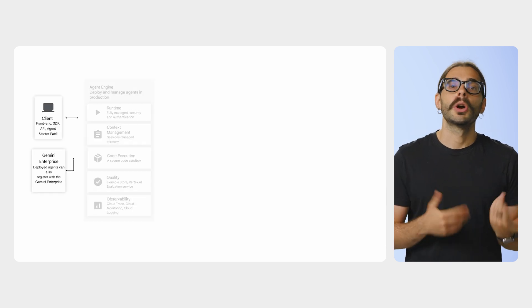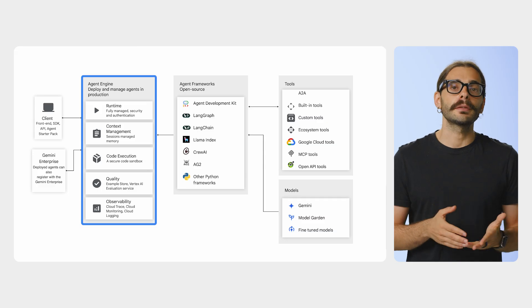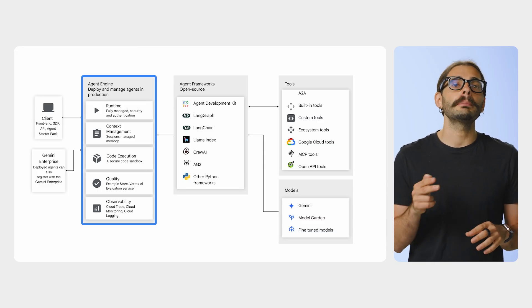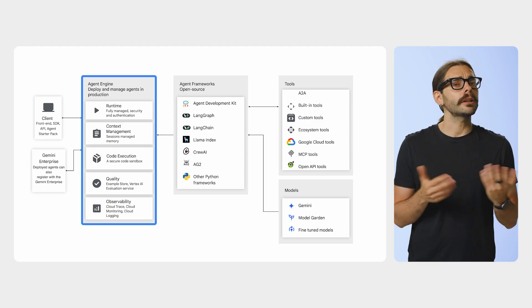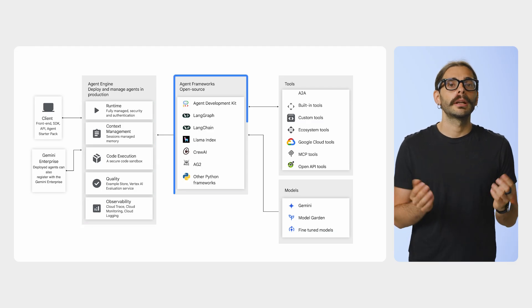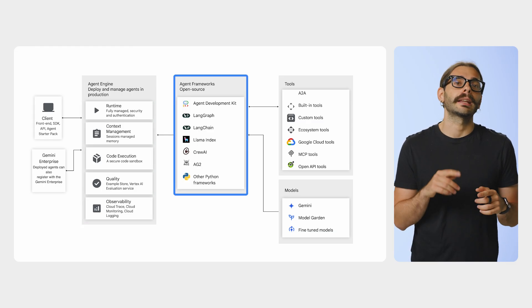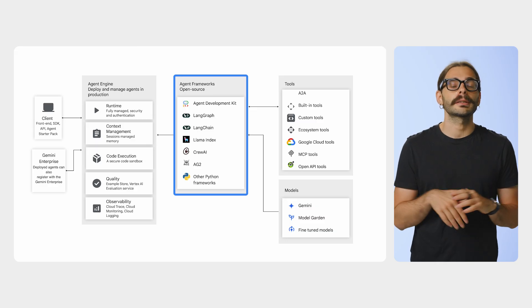So, what is Vertex AI Agent Engine? It's a set of services within Vertex AI that helps you to deploy, manage, and scale your AI agents. It's not a new framework — it works with the frameworks that you already love, like ADK, LangGraph, and others. Vertex AI Agent Engine has several components, so let's break them down.